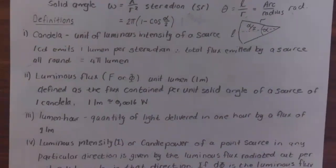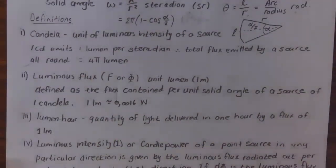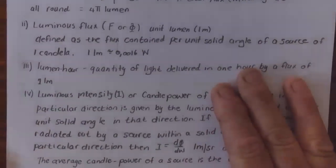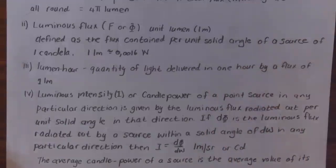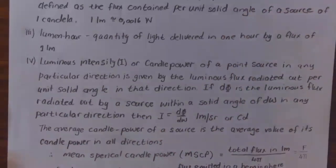The next definition is candela, the unit of illumination intensity of a source. One candela emits one lumen per steradian; therefore the total flux emitted by the source all around is 4π lumens. The luminous flux F or phi, with the unit of lumen, is defined as the flux contained per unit solid angle of a source of one candela, and one lumen is approximately 0.0016 watt.